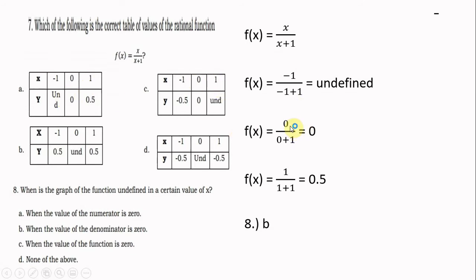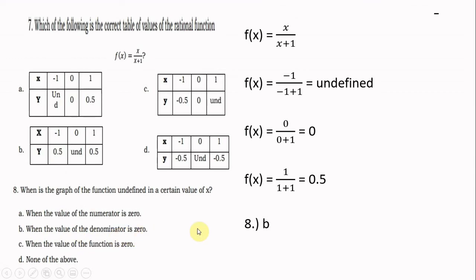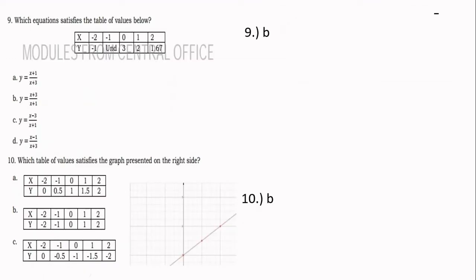When x = 0, substituting gives y = 0, confirming letter A. For number 8, when is the graph of a rational function undefined for certain values of x? It is undefined when the denominator equals 0. The answer is letter B: when the value of the denominator is 0, the function is undefined.